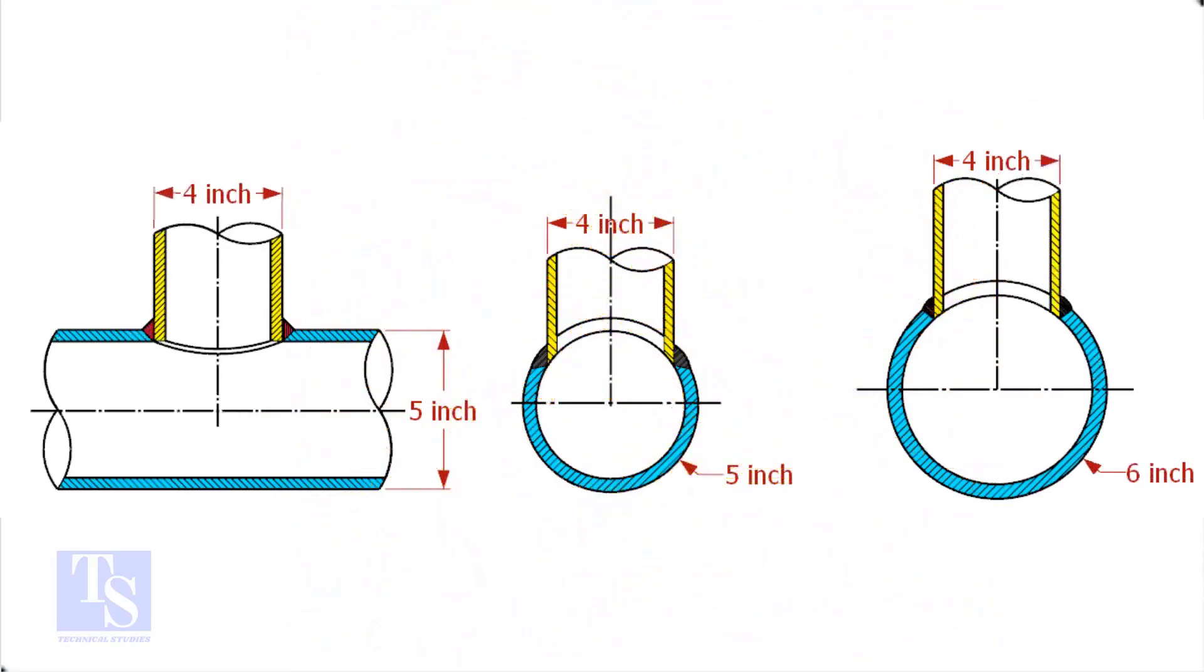In the case of stub-in connections, the branch pipe size is one or more units less than the header size. Suppose both the header and the branch size are the same, a stub-in connection is not possible.